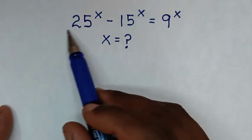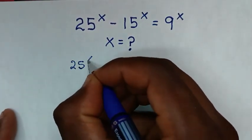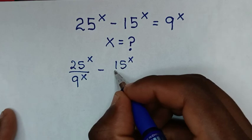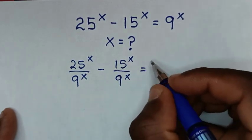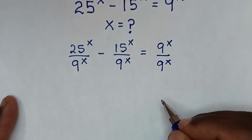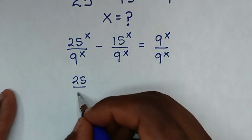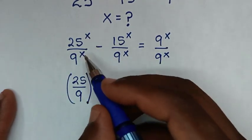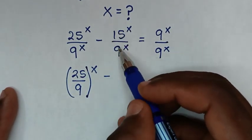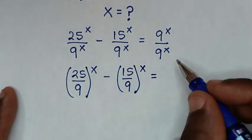In the first step, we divide both sides by 9^x. This gives us (25/9)^x minus (15/9)^x is equal to 9^x over 9^x, since the power of x is common in both numerator terms.